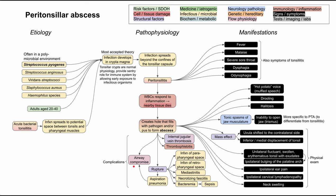Lastly, a quick word on how to diagnose this. It's largely a clinical diagnosis. You can do your standard tests for strep and might want to do a mono test as well to rule that out. If you do a CT scan with contrast, you will be able to see the abscess — if it's large, it'll look like a hypodense lesion in the narrow pharynx. But a CT with contrast is not always necessary for the diagnosis. This has been a flowchart for peritonsillar abscess — I hope it was helpful.